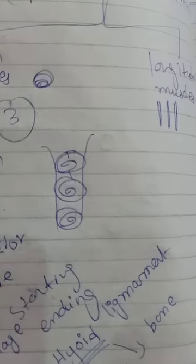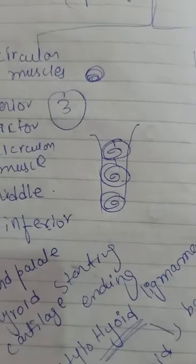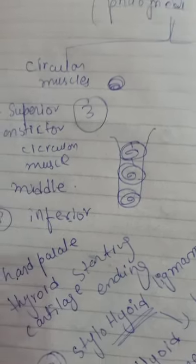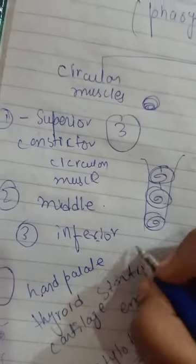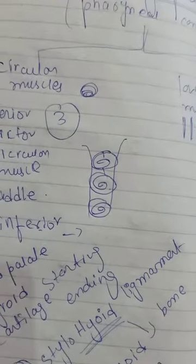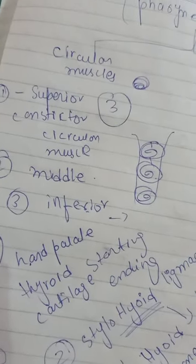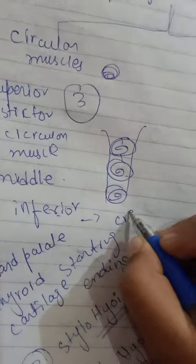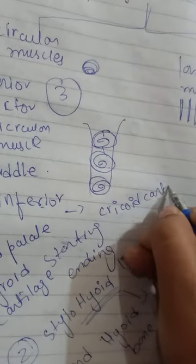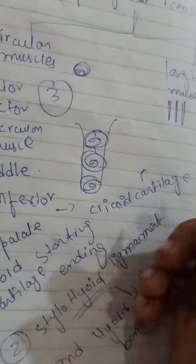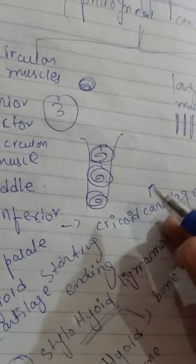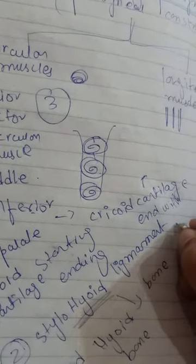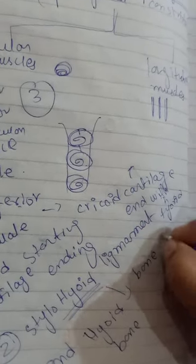The inferior constrictor, or inferior circular muscle, basically starts from the cricoid cartilage and ends with the thyroid cartilage. Cartilage is a flexible bone in our body, and this is on the lateral side. So the inferior constrictor starts from the cricoid cartilage and ends with the thyroid cartilage. They all have an ending point and an origin point.